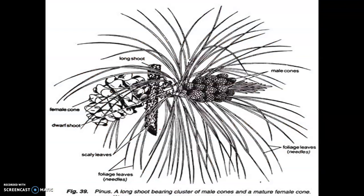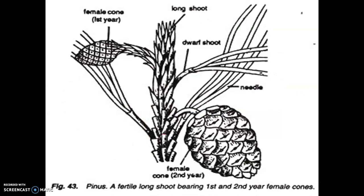This diagram shows the long shoot of Pinus bearing male cones — it is a cluster of many male cones present in a group. This is the mature female cone. The main branch consists of scale leaves; these are the green photosynthetic leaves also termed needles. This is the mature female cone of the second year; this is the female cone of the first year. This is the long shoot and this is the dwarf shoot containing three needles, that is why it is known as trifoliate.